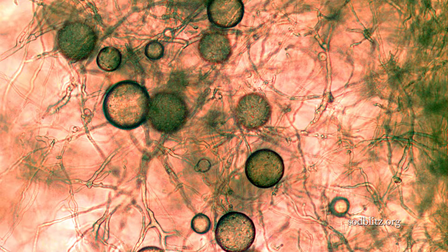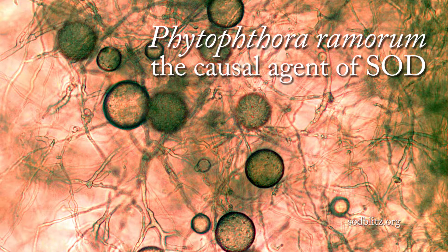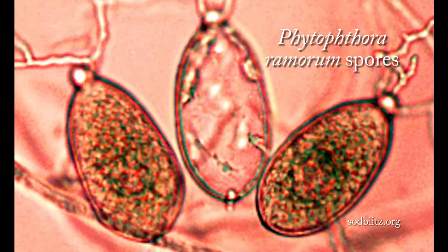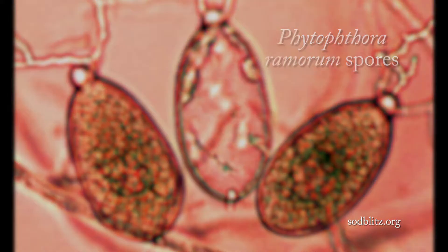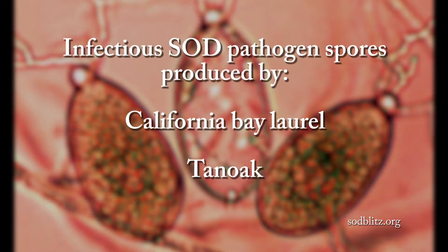The SOD pathogen can infect four species of oaks and the related tan oak. However, the spread of the disease is affected by spores that are carried by the wind and that are produced on the leaves of two trees. The most important producer of spores is the California bay laurel, and the second most important producer of spores is the tan oak. Because California bay laurel and tan oaks are the two most important plants for the spread of sudden oak death, the focus of the sudden oak death blitzes is on how to survey the leaves of these two species.